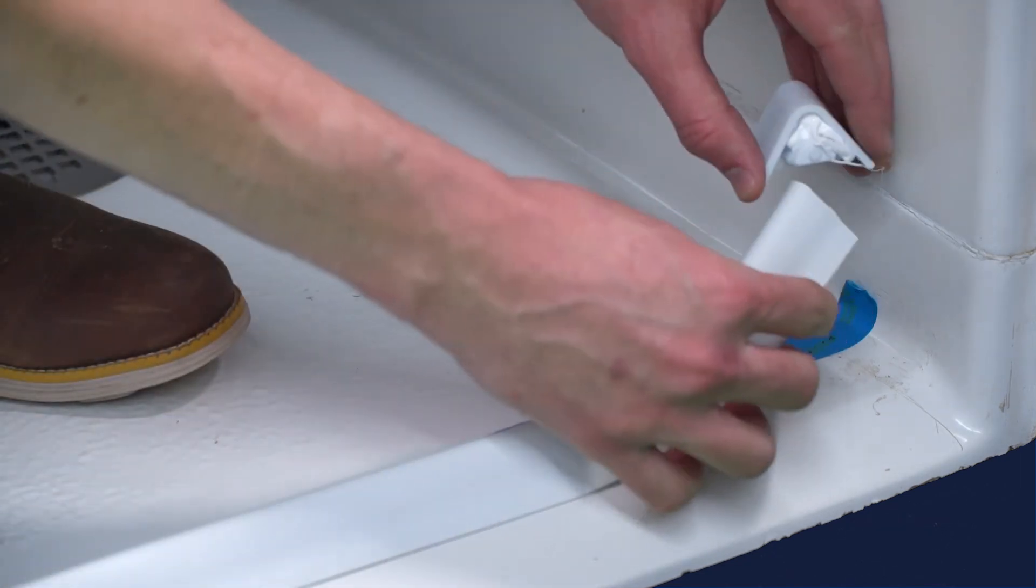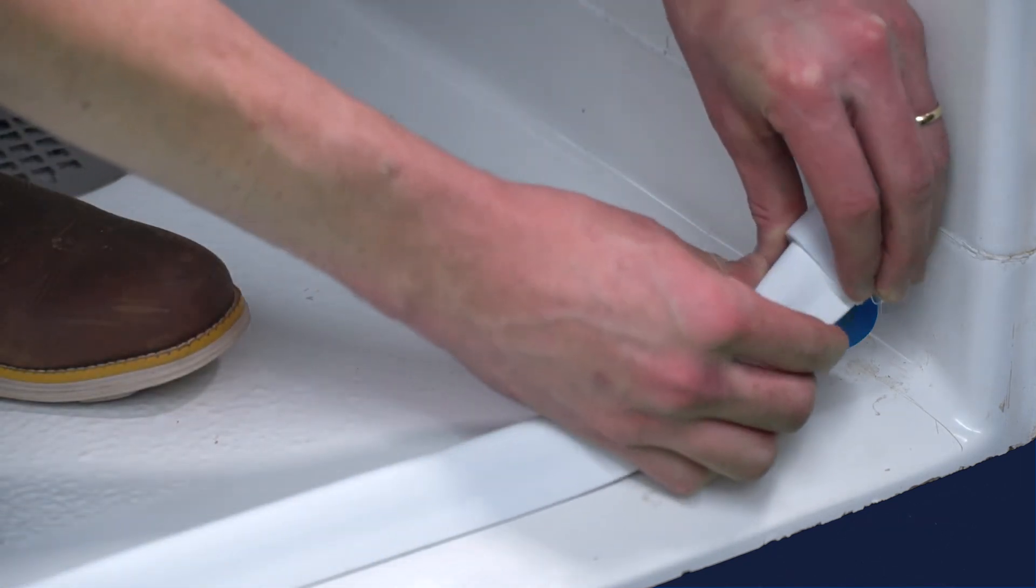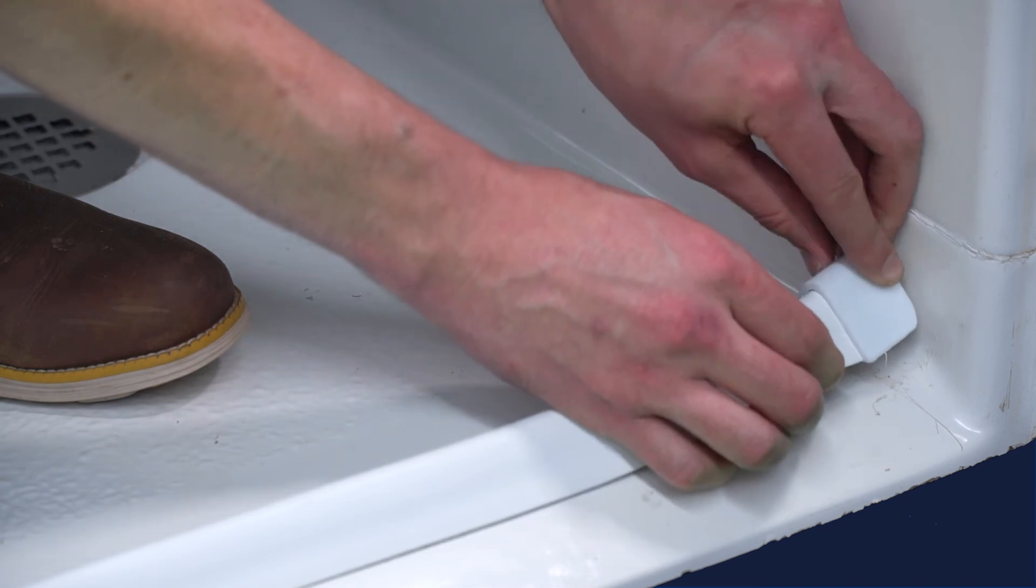Number seven, apply caulking to both sides of the end cap and fit the caps into the gap. Wipe away any excess caulking with alcohol and rag.